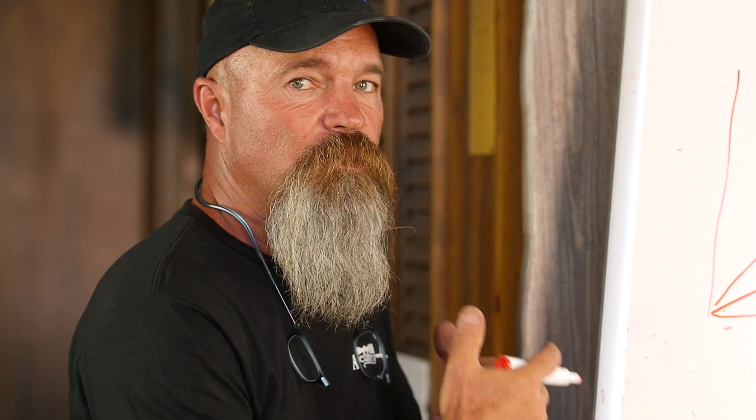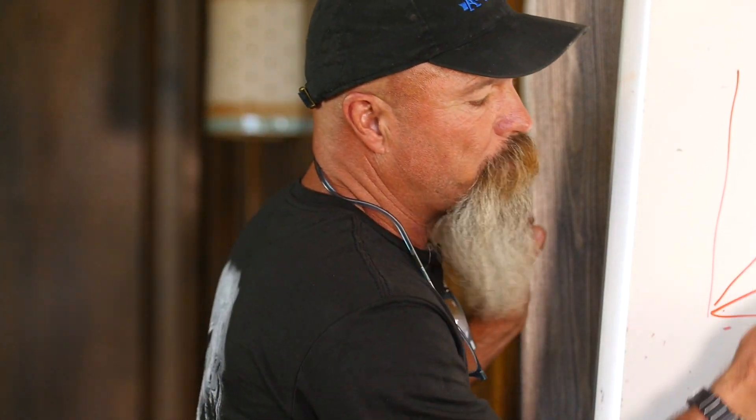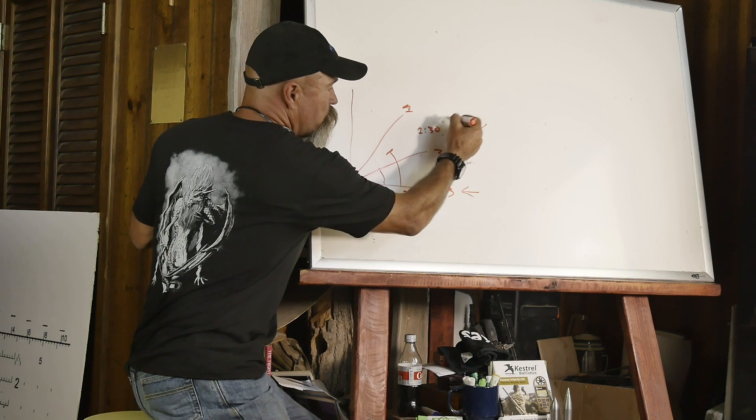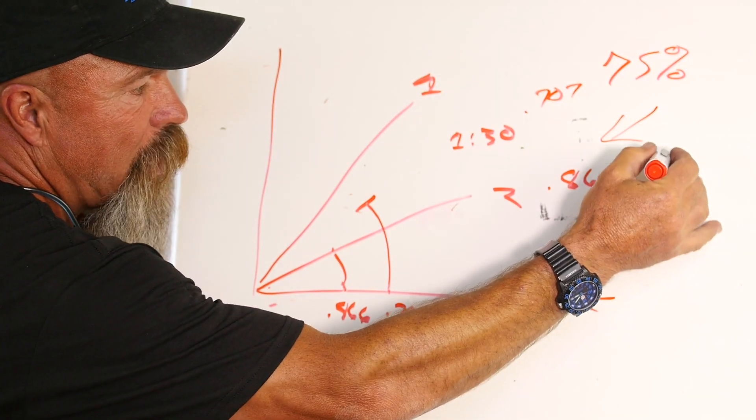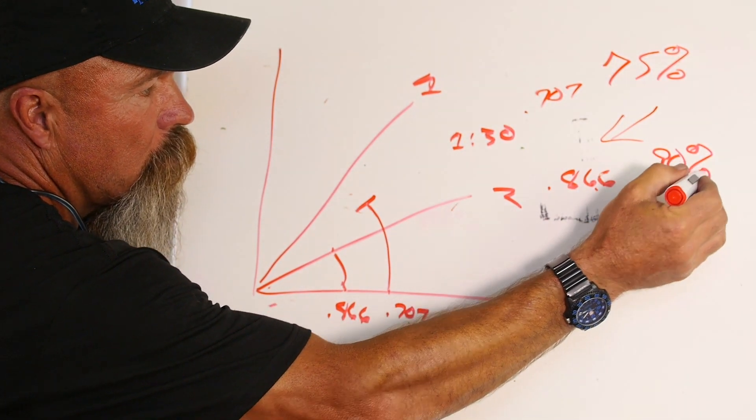So you can learn cosines. You can learn the math on how to come up with it. So this is 0.707. We call it 75 percent. This was 90 percent.